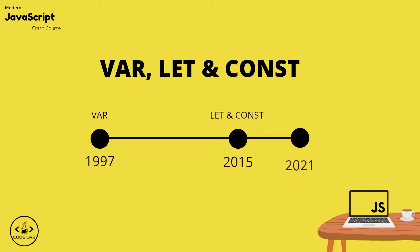When JavaScript was first created we could only declare variables with the var keyword, and var held its glory for almost a decade. However in 2015, let and const were created and introduced, which didn't immediately shake up the system. But slowly but surely, now in the present day let and const are predominantly used, and var is not obsolete but generally considered bad coding practice because of its disadvantages, which we're going to be going over in this video.